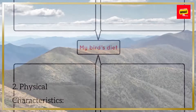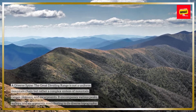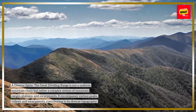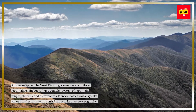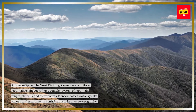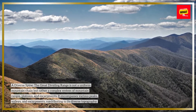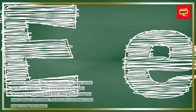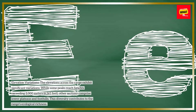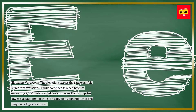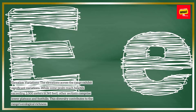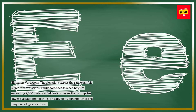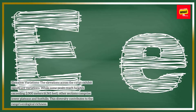Physical Characteristics: A diverse spine. The Great Dividing Range is not a uniform mountain chain but rather a complex system of mountain ranges, plateaus, and escarpments. It encompasses various peaks, valleys, and escarpments, contributing to its diverse topography. The elevations across the range exhibit significant variations. While some peaks reach heights exceeding 2,000 meters (6,561 feet), other sections comprise lower plateaus and foothills. This diversity contributes to the range's ecological richness.